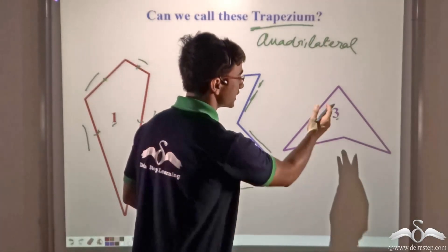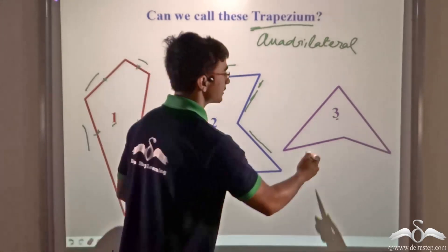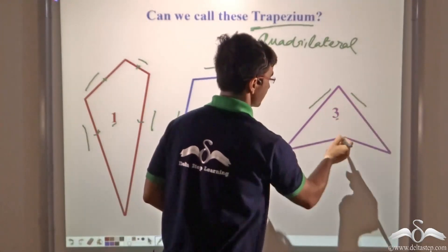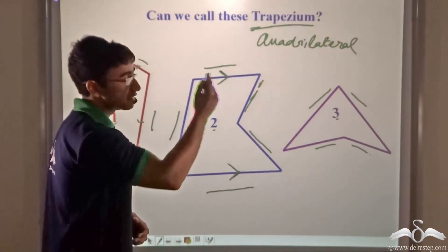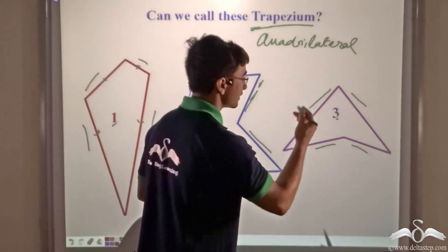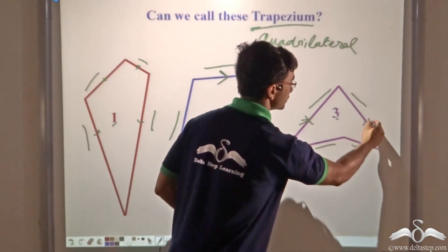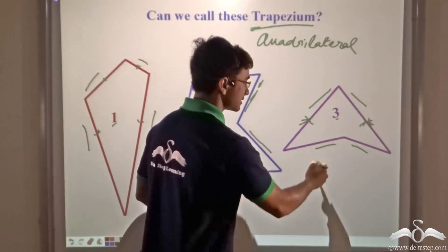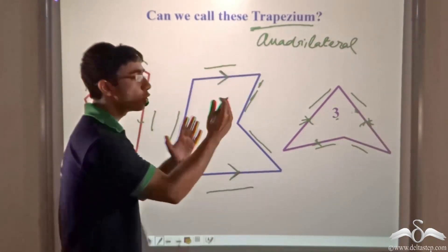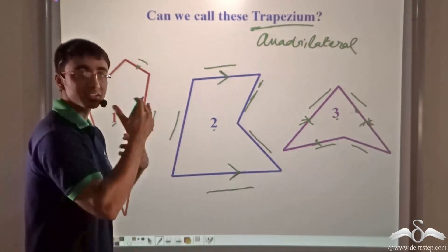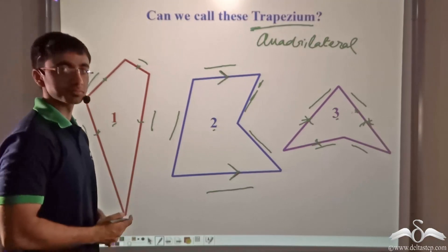Figure 3 has four sides, so it is a quadrilateral. However, no pair of opposite sides are parallel to one another, so figure 3 is also not a trapezium.